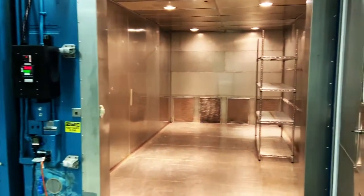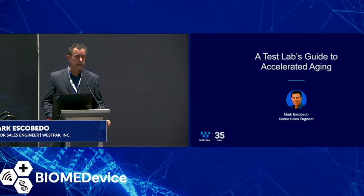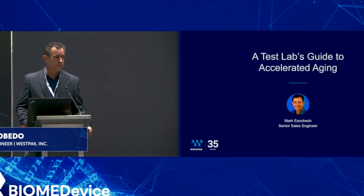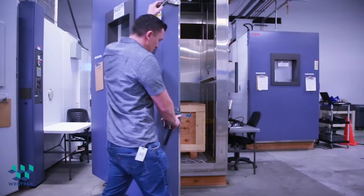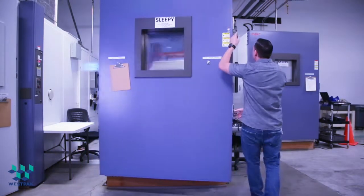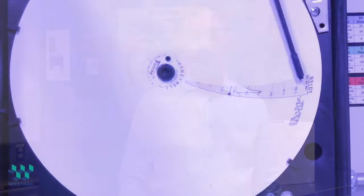The changes that were made were editorial in nature. As I mentioned back in the accelerated aging discussion, knowing your moisture sensitivity of your product is important. Similarly, the changes here talk about knowing the moisture sensitivity of your product and your package, whether it's high sensitivity to moisture or low sensitivity to moisture.